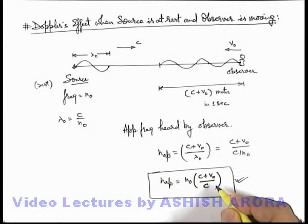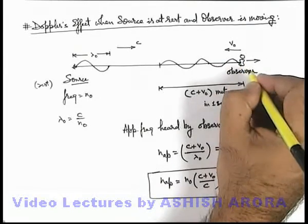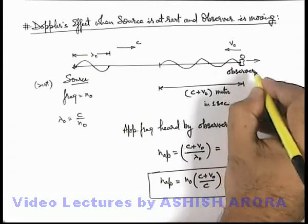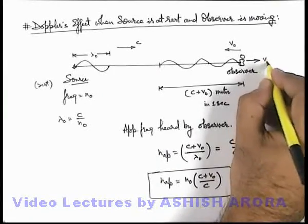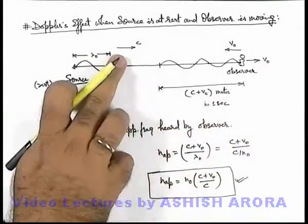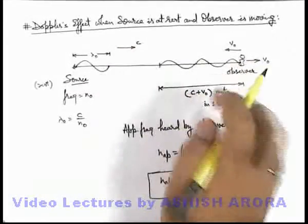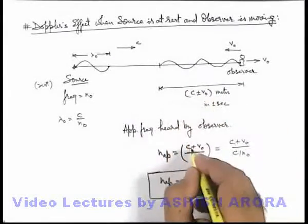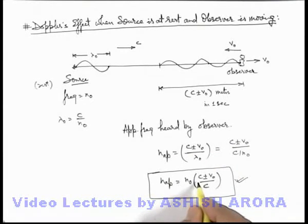This will be n₀, and we can also modify this relation if the velocity of observer is in opposite direction. Say if the observer is moving in the opposite direction, that is it is receding away from the source with the speed v₀, then the relative speed of sound with respect to observer will become c minus v₀. So if this will be c minus v₀, these all signs will get changed, and the frequency will be n₀(c minus v₀) by c.